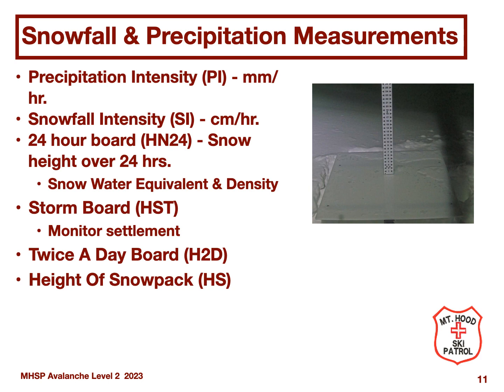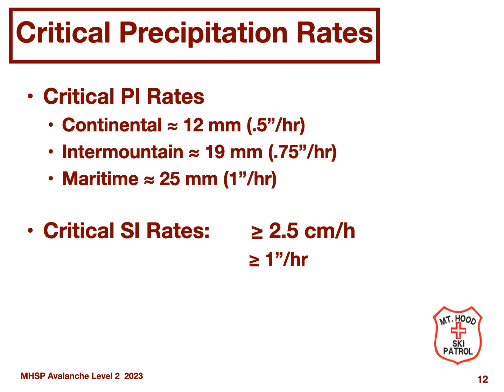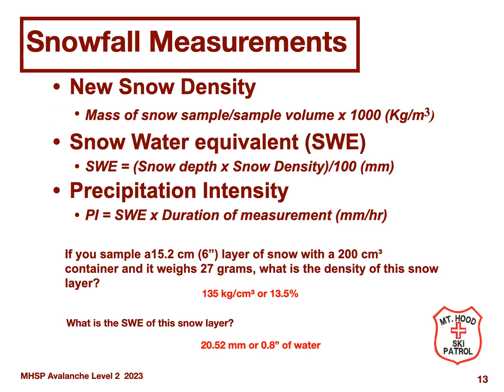There are several other key parameters related to precipitation shown on this slide. Pay particular attention to precipitation intensity (PI) and snowfall intensity (SI). There are critical PI and SI rates that act as red flags for avalanche risk. For the maritime region, PI rates of 1 inch per hour or more and SI rates of 1 inch per hour or more should trigger concern for increased avalanche risk. Please work through the SWE and density calculation examples on your own — we will do more examples in the breakout session. You should be able to calculate density and SWE from basic telemetry data.